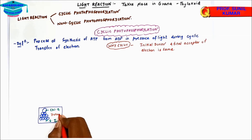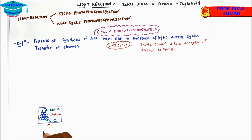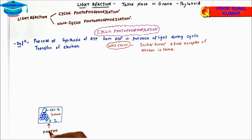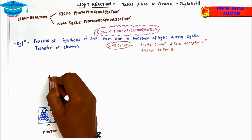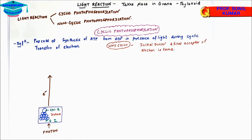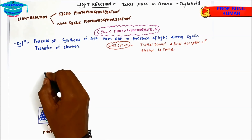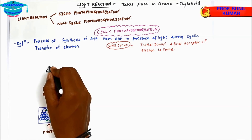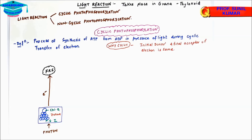Photosystem one absorbs light energy at 700 nanometer wavelength. It absorbs one photon because only one electron is liberated. Chlorophyll a of photosystem one absorbs light energy in the form of a photon and becomes excited. Under this excitation, it loses energy in the form of an electron. That electron first goes to FRs — ferredoxin reducing substance.